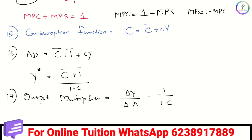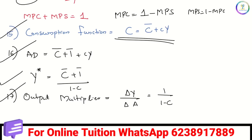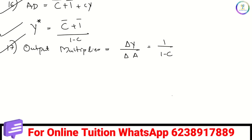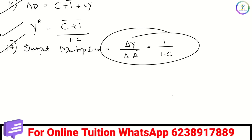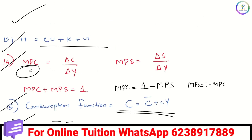Consumption function: C equals C-bar plus c times Y. Aggregate Demand is C-bar plus I-bar plus c times Y, where C-bar is autonomous consumption, I-bar is autonomous investment, and small c is MPC. Equilibrium income Y-star equals C-bar plus I-bar, divided by 1 minus c. The output multiplier is delta Y by delta A equals 1 by 1 minus c. These are the important equations in macroeconomics.